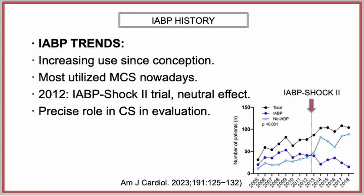Counterpulsation has experienced increasing use since its conception in the 1960s. Even though the publication of the IAB Shock 2 trial in 2012 slowed this growth, it remains the most utilized ventricular support device globally due to its easy implantation, widespread availability, and lower cost. Nevertheless, its precise role in circulatory support therapy undergoes constant evaluation and evolution as new technologies and clinical data emerge.